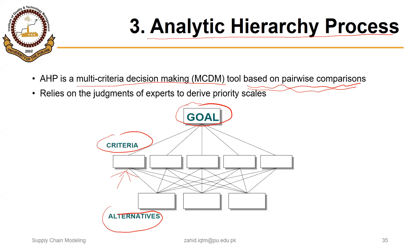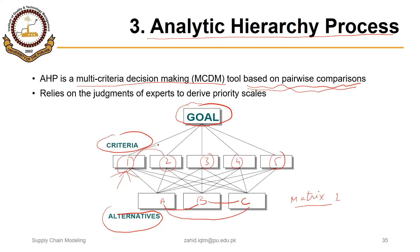We compare alternatives with alternatives based on each criterion. For example, with five criteria and three alternatives A, B, and C, we compare A with B, A with C, and B with C with respect to each of the five criteria, giving us a matrix — call it matrix one. We also compare criteria with criteria: criterion one with two, one with three, one with four, one with five, and so on, giving us matrix two. We multiply these two matrices to ultimately find which alternative is best.